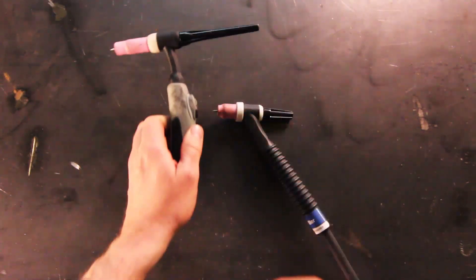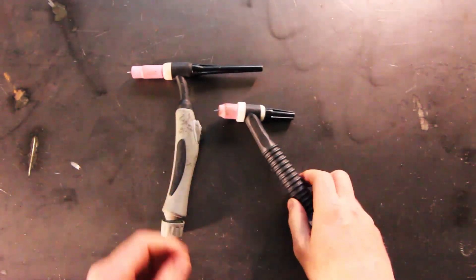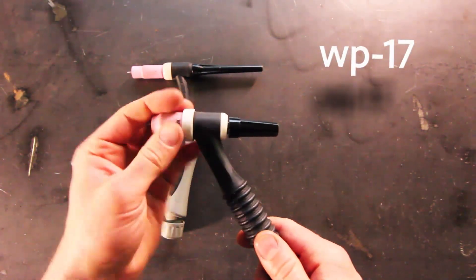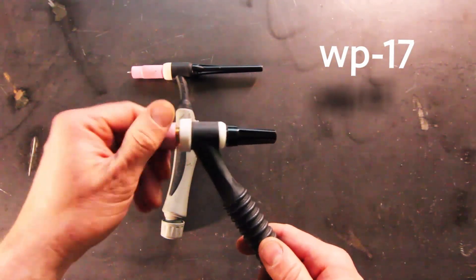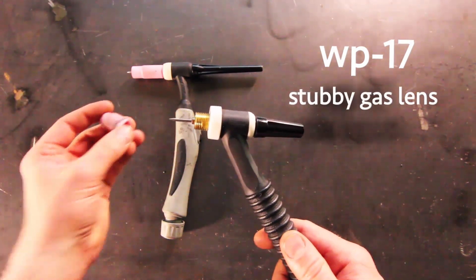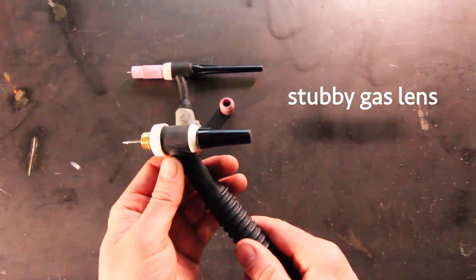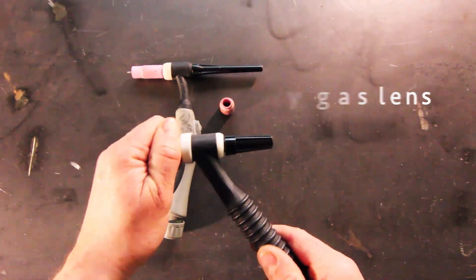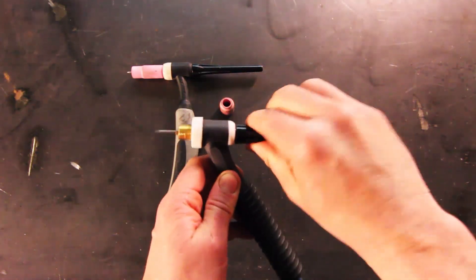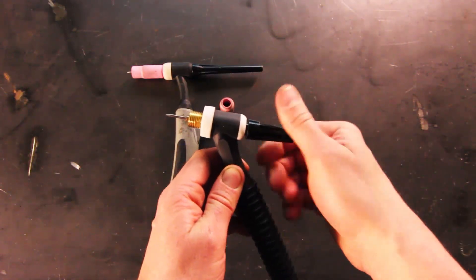Here you can see the WP-17 torch has what's called a stubby gas lens kit. This is how I like to set up my torch. You can see that the nozzle or cup is much shorter than the standard cup. When you take the back cap off, unscrew the back cap.